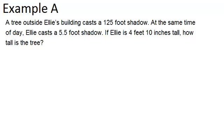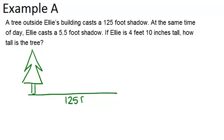Let's start by making a picture. We're talking about a tree that we don't know how tall it is, but it casts a 125-foot shadow. How tall the tree is is going to be our x, and this is our triangle for that situation.